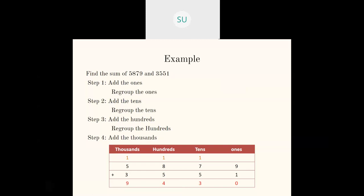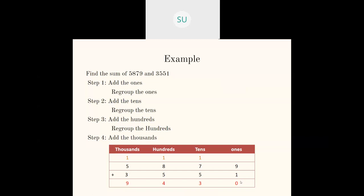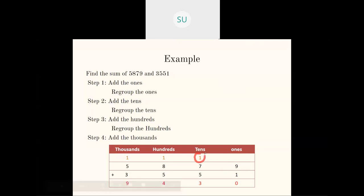Another example: 5,879 plus 3,551. First add the 1's: 9 plus 1 is 10. Write 0 in the 1's place and carry over 1 ten to the 10's place. Then 7 plus 5 is 12, plus 1 is 13. Write 3 and carry over 1 to the 100's place. Then 8 plus 5 is 13, plus 1 is 14. Write 4 and carry over 1 to the 1000's place. Then 5 plus 3 is 8 and 8 plus 1 is 9. Answer is 9,430.